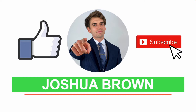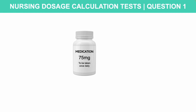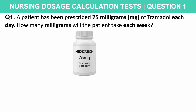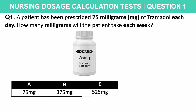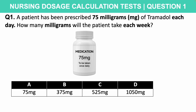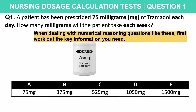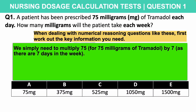Let's get started with the first nursing calculation style aptitude test question. A patient has been prescribed 75 milligrams of tramadol each day. How many milligrams would the patient take each week? Is it A: 75 mg, B: 375 mg, C: 525 mg, D: 1050 mg, or E: 1500 mg? When dealing with numerical questions like these, first work out the key information — 75 milligrams each day. We simply multiply 75 by seven, as there are seven days in the week. 75 times 7 is 525, so the correct answer is C: 525 mg.